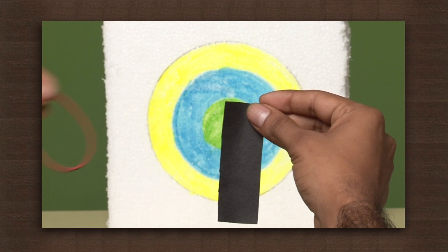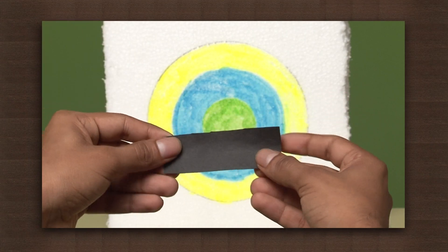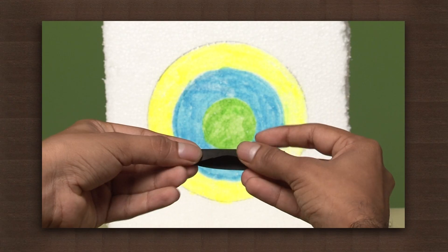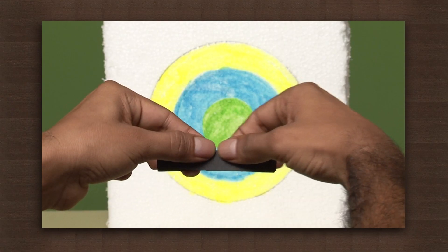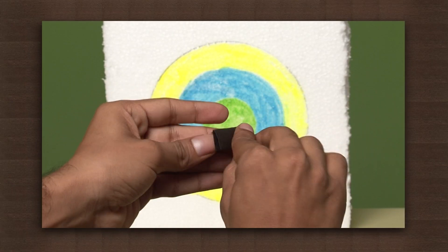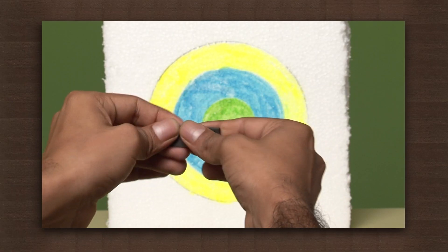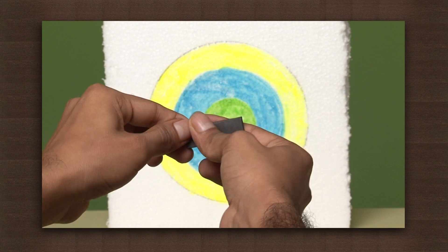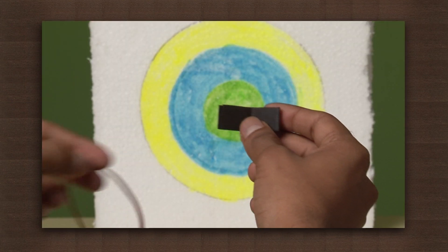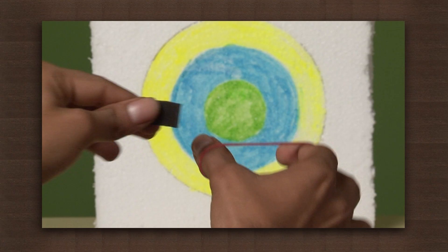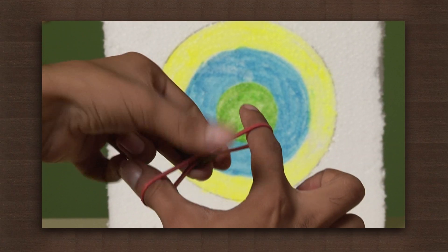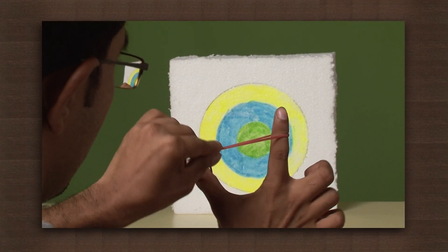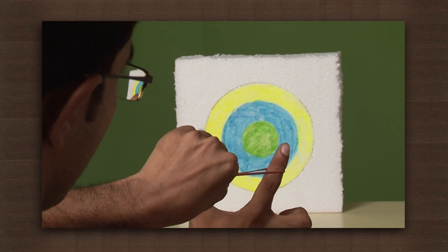Let us see this with an example. We need a rubber band and a small piece of paper. Fold the piece of paper like this. Now hold the rubber band between your thumb and index finger like this. Slide the paper in the band and stretch the band along with the paper towards you.